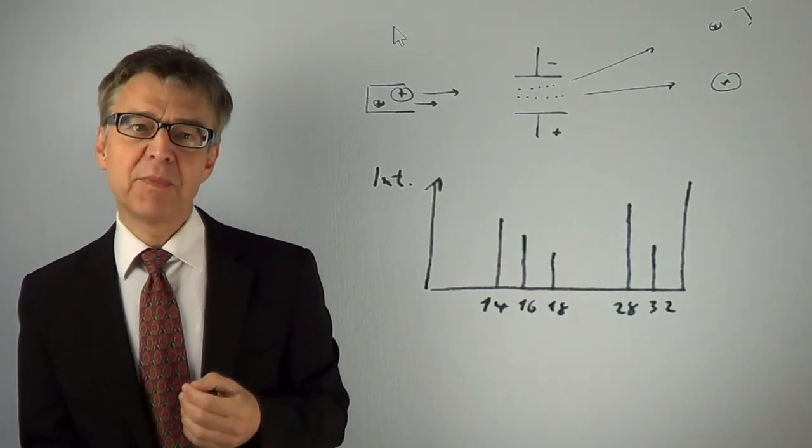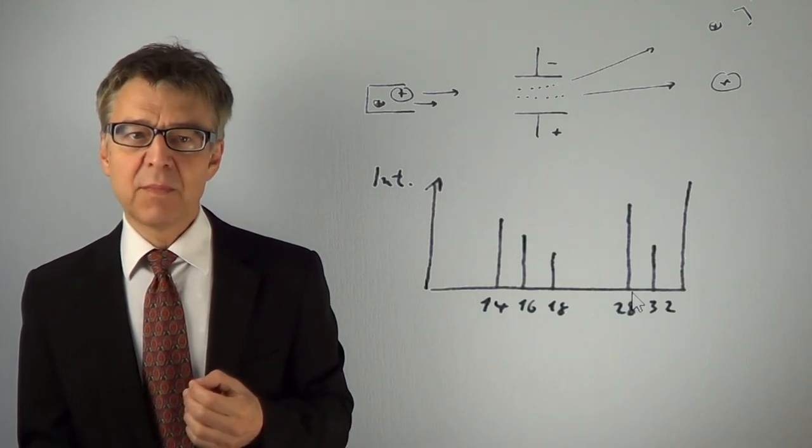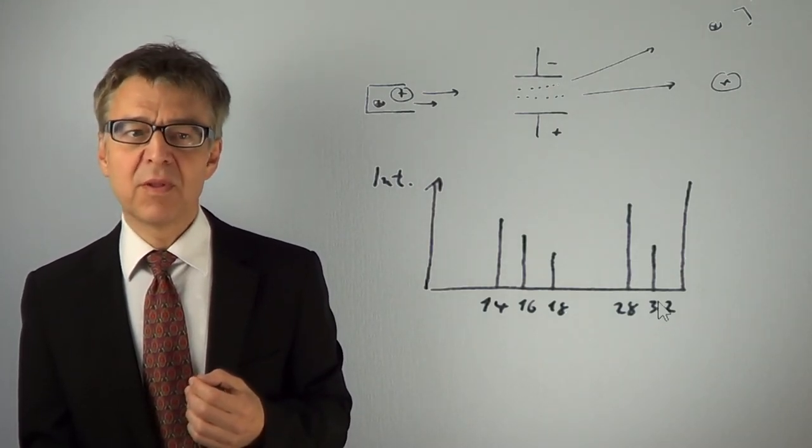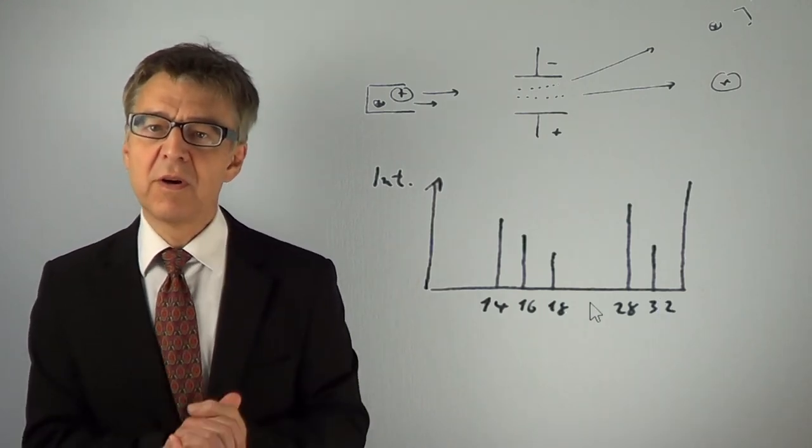Analyzing air in a mass spectrometer, we get the following mass spectrum. 28, the molar mass of nitrogen. 32, the molar mass of oxygen. 18, water from humidity.